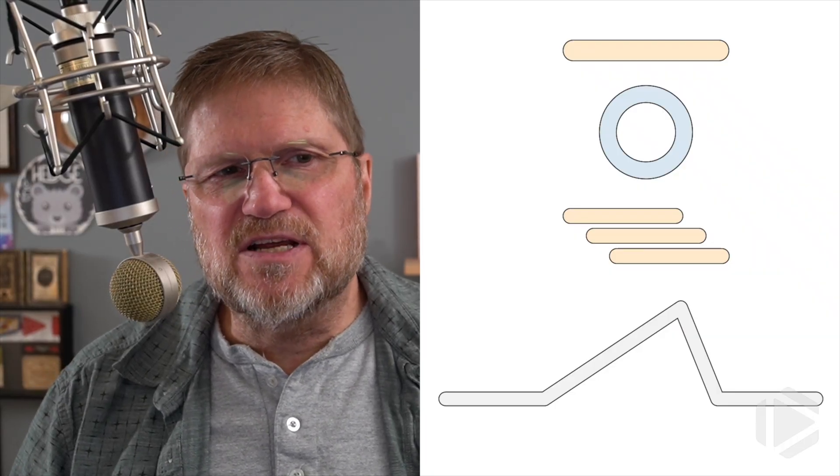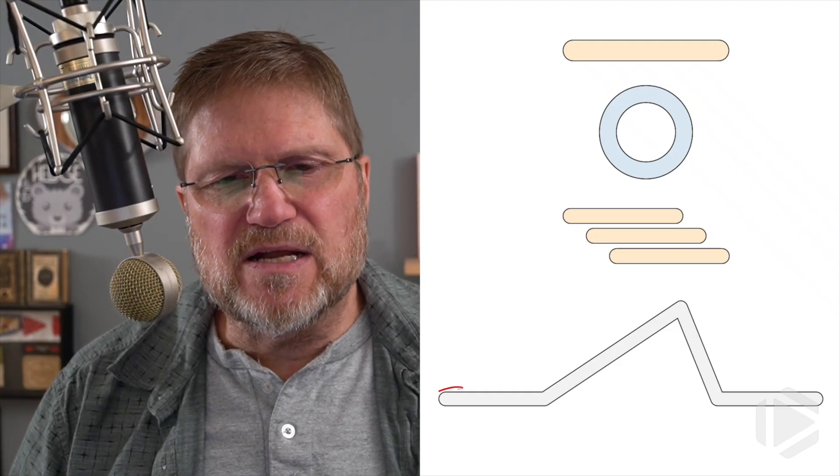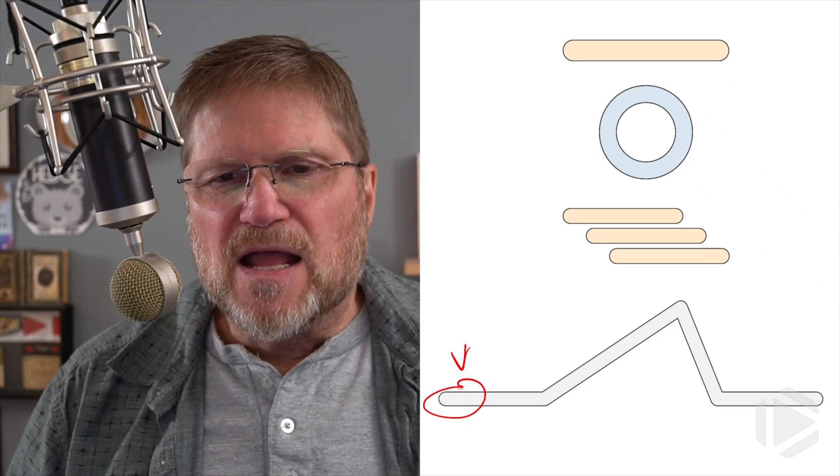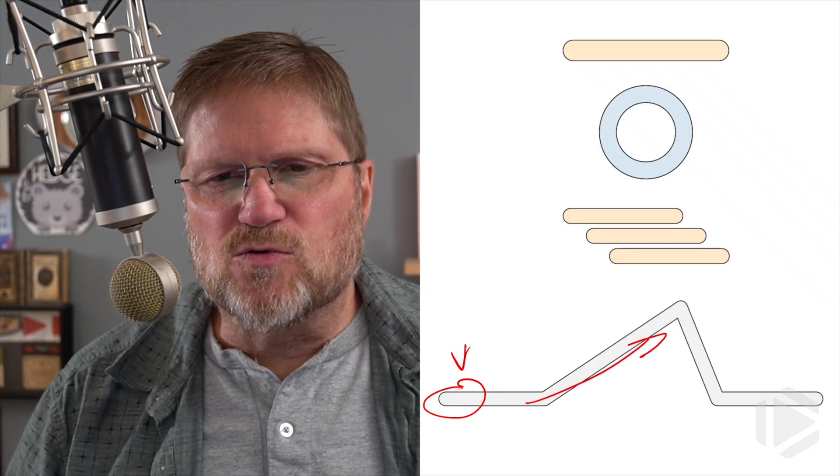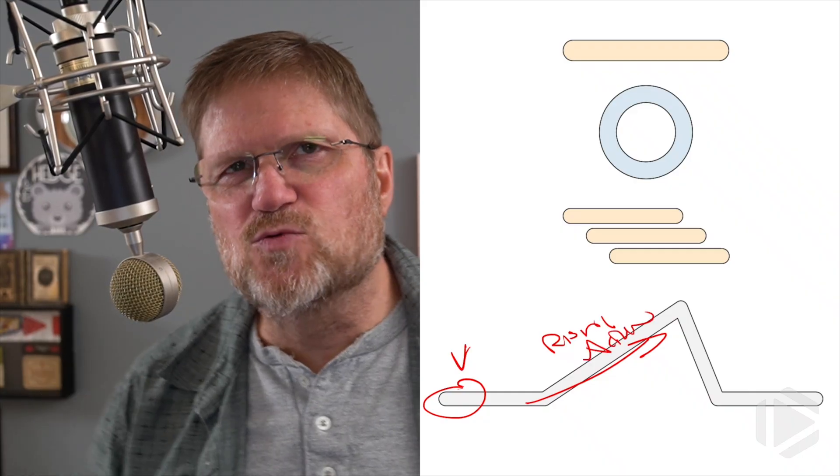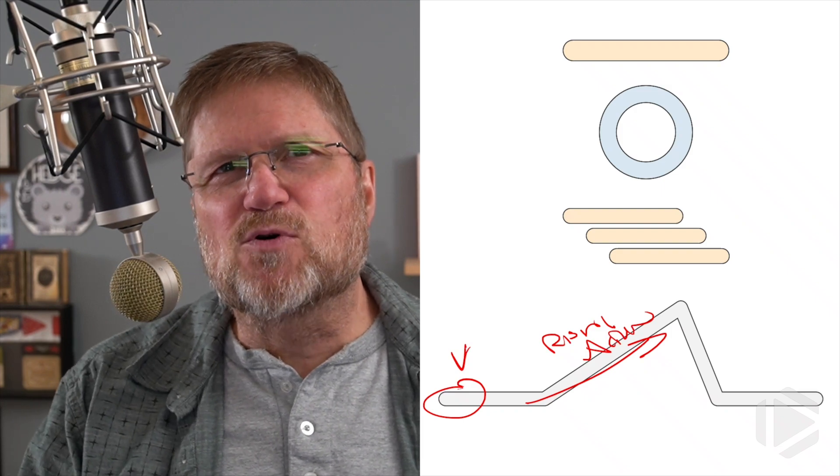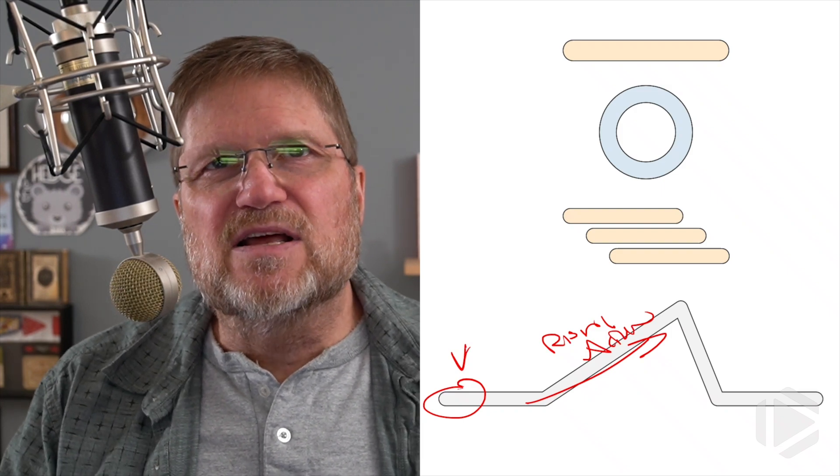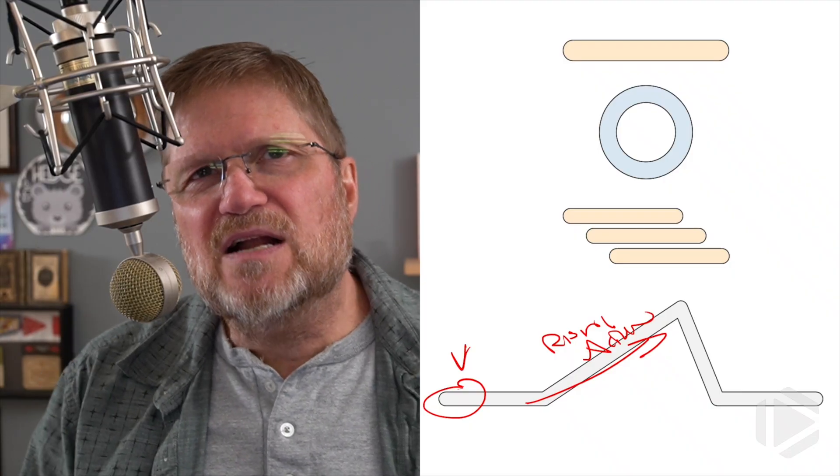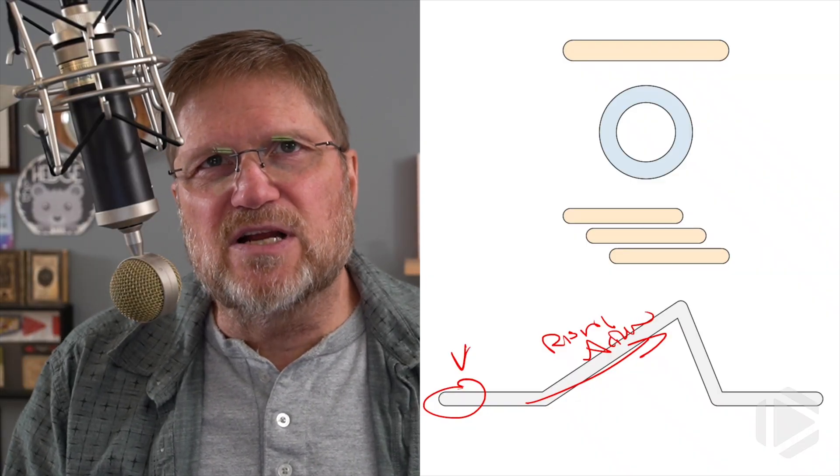The first of these is the Fichtian curve shown here. So in a Fichtian curve, we begin at the beginning, because that's always a good place to begin. And then we have this section called the rising action. So the rising action is where we're building tension, setting up a problem that needs to be somehow resolved.